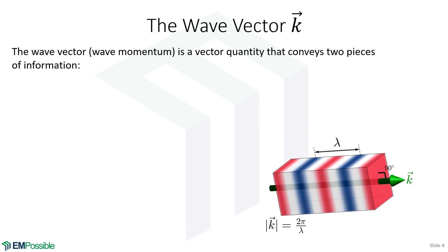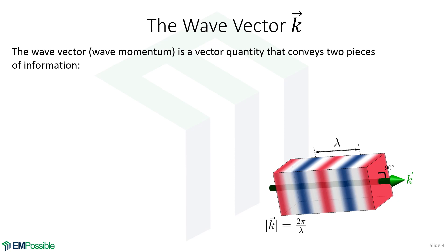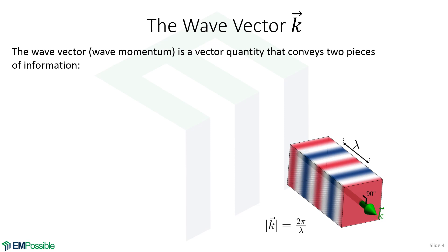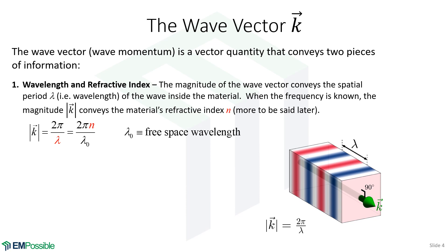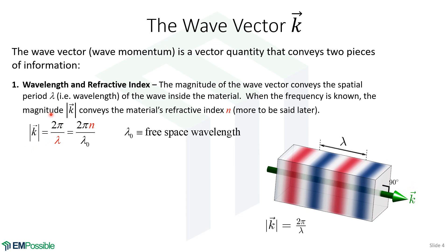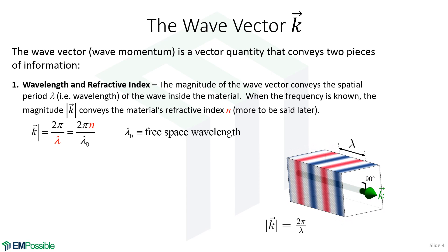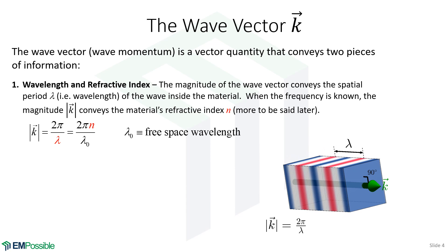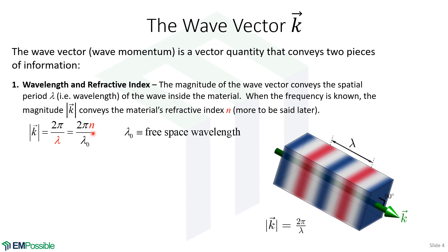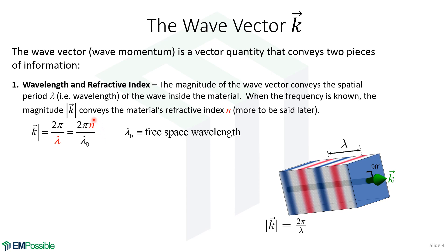Intimate throughout all of this is the concept of the wave vector. The wave vector is a vector conveying two pieces of information at the same time. The magnitude of the wave vector most fundamentally conveys wavelength: the magnitude of k is 2π divided by the wavelength. If the frequency of the wave is known, the wavelength in free space is also fixed, so we can write the magnitude as 2π over the free-space wavelength times the refractive index. When frequency is known, the magnitude of the wave vector actually conveys refractive index; if frequency is not known, it only conveys wavelength.